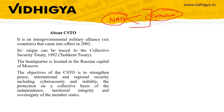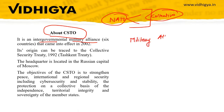We have discussed NATO in one of our previous lectures, and also in our Hindu analysis sessions. Now we'll discuss CSTO — the Collective Security Treaty Organization. It is an intergovernmental military alliance — remember, it is a military alliance — that came into effect in 2002.